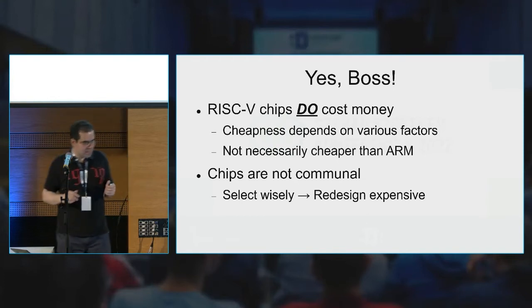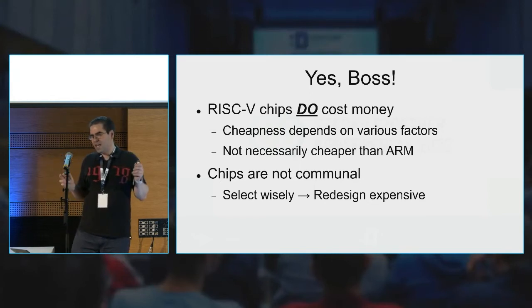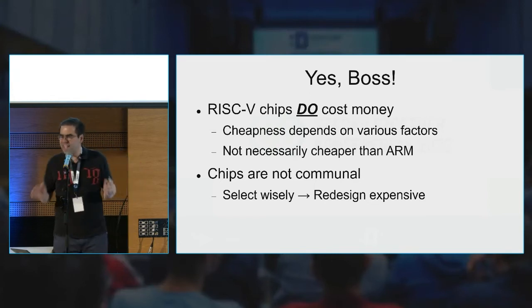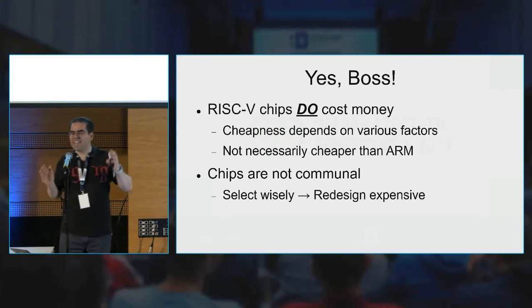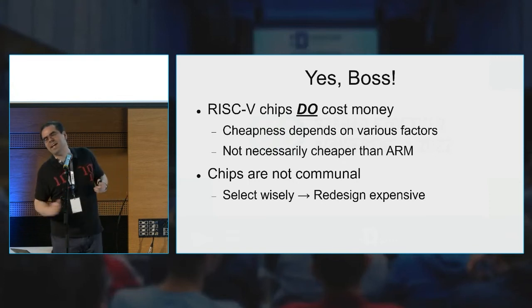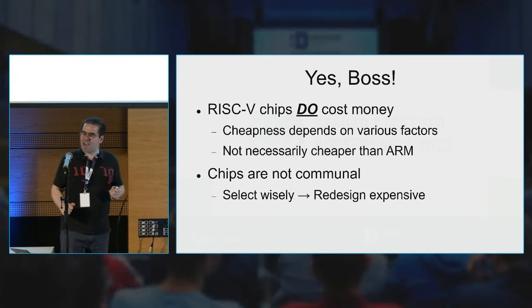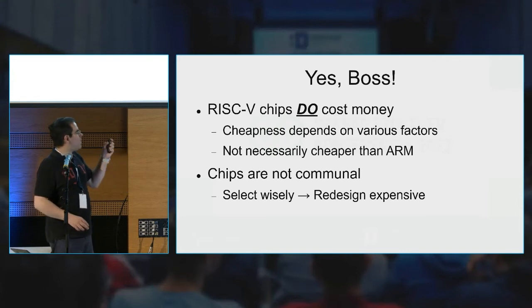The economies of scale, together with ARM competing very aggressively on pricing, has led to the weird situation that in some cases you can get ARM chips for cheaper than RISC-V chips. This is very rare. Now in the chip crisis it's basically impossible. But I'm just mentioning this just in case.